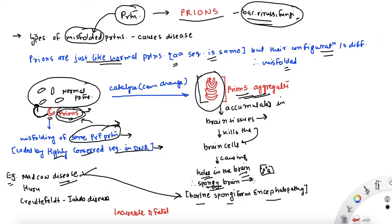And the examples of prion diseases are mad cow disease, you must have heard about it, kuru, Creutzfeldt-Jakob disease. And these are all incurable, fatal diseases. They are extremely rare, but they are incurable and fatal diseases.